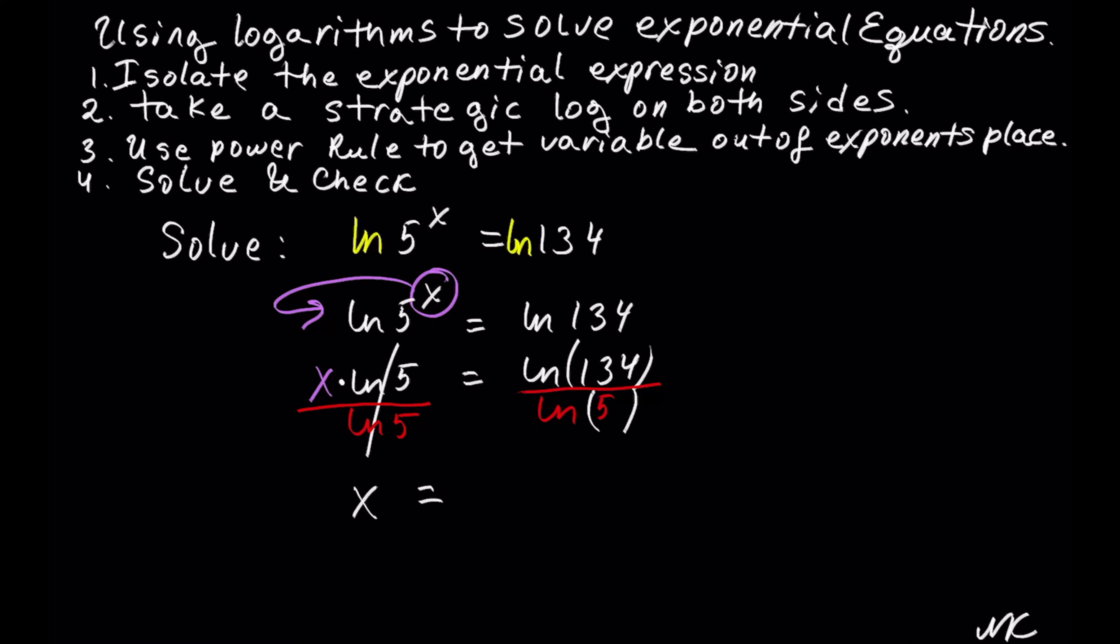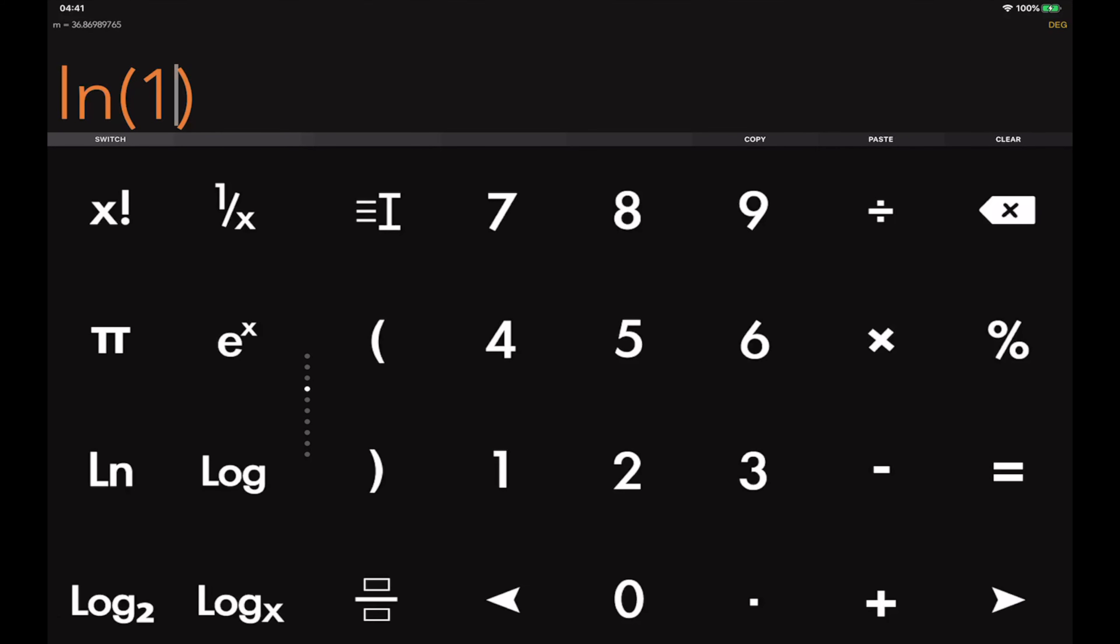Let's plug it into the calculator. So we have ln of 134 divided by ln of 5, which gives us 3.043198972. Let's round this off to 4 decimal places and have 3.0432.